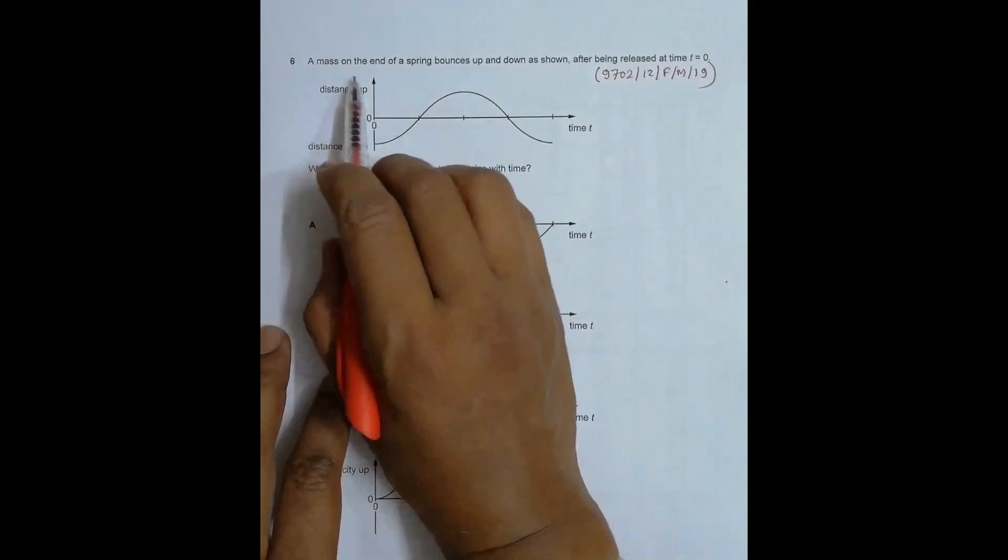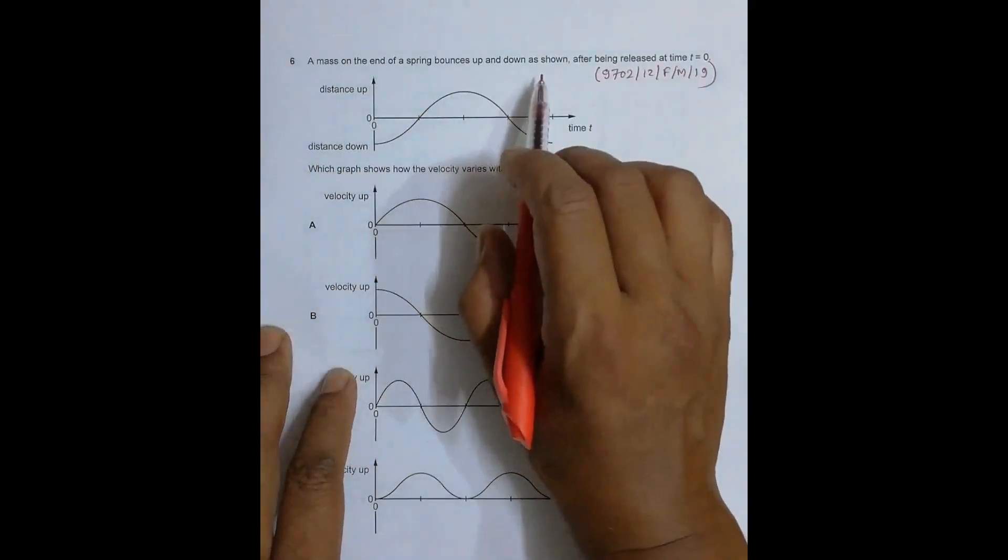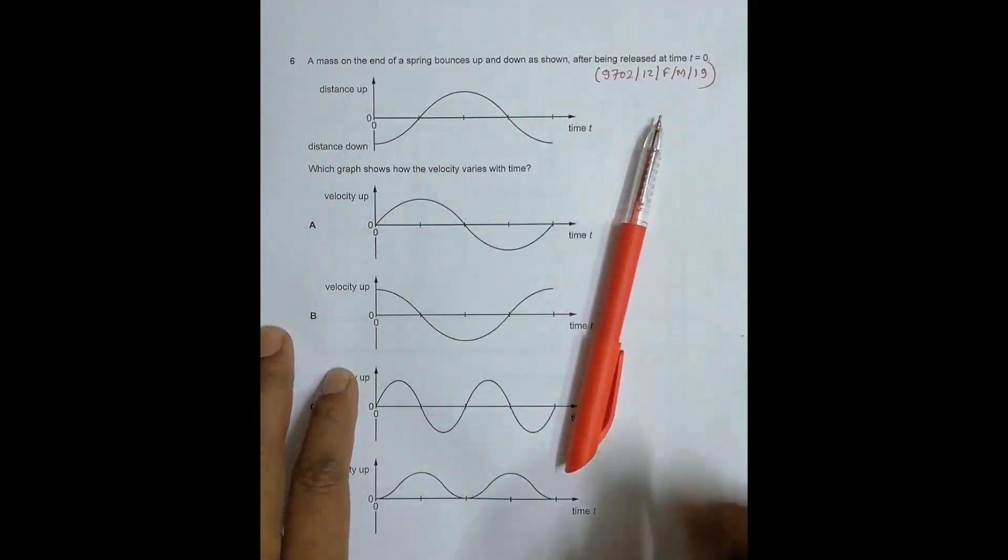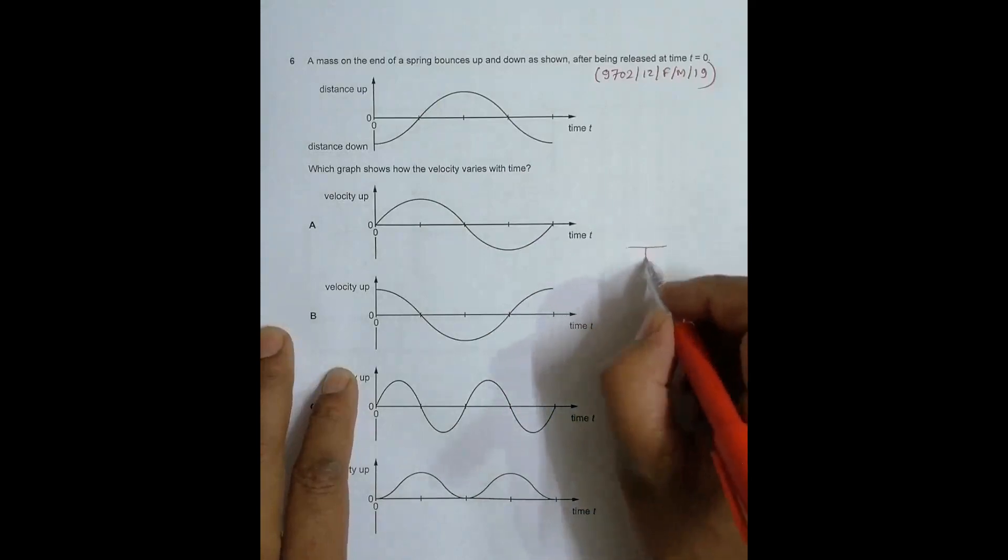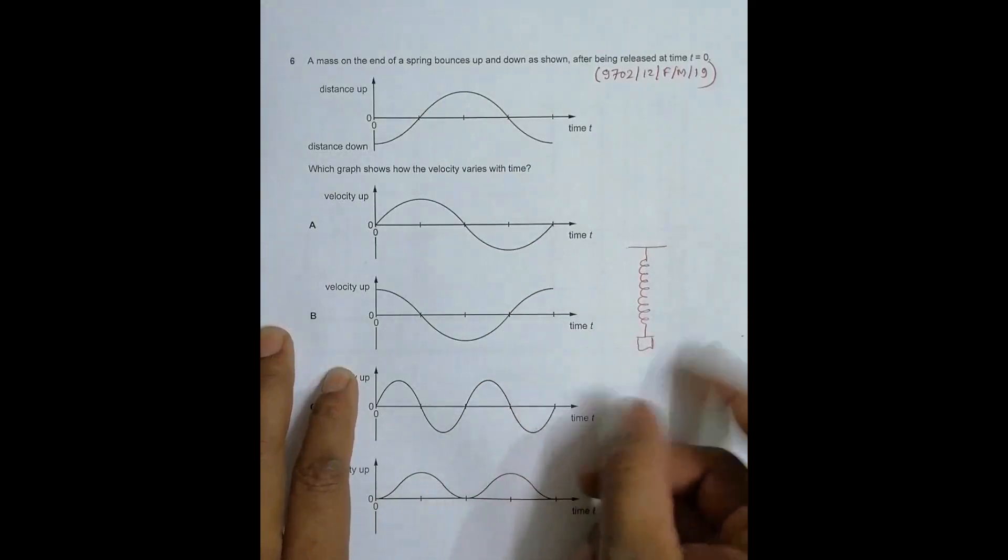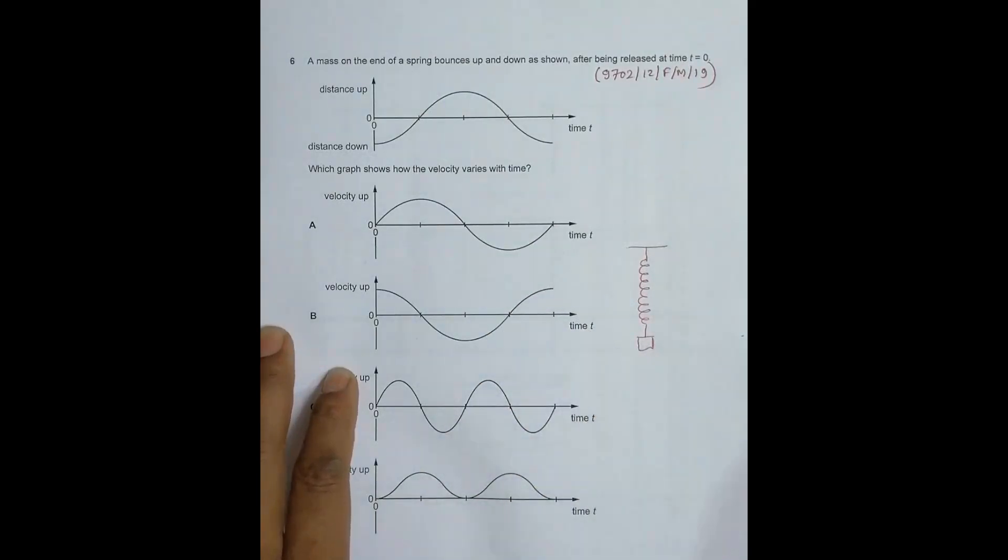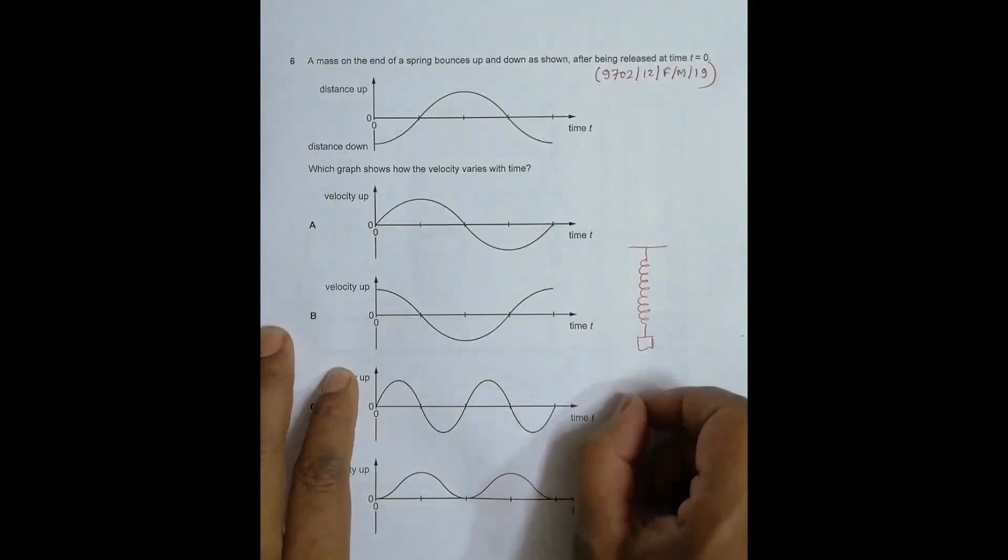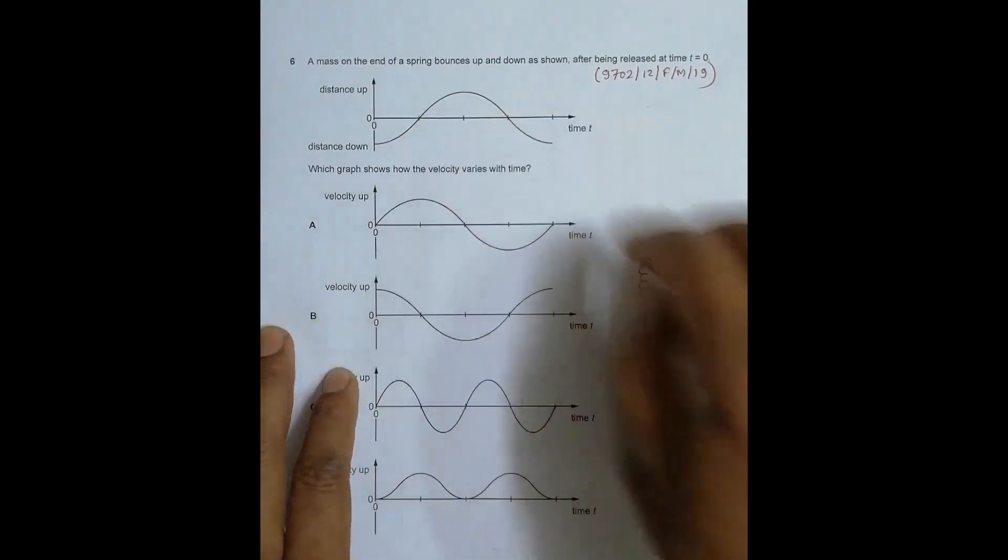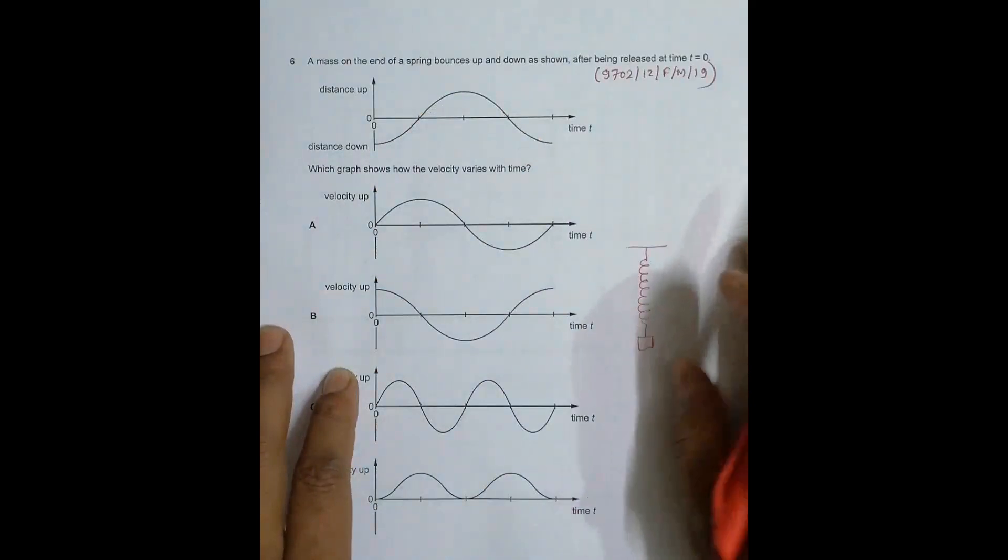It says that a mass on the end of a spring bounces up and down as shown after being released at time t equals zero. So we have a spring here with a load mass. We pull it down, then leave it. Initially here, the distance down is maximum. We leave it, so it comes here, then goes up, then down again, and so on. This is the graph of distance versus time, distance up or distance down, which we can relate to displacement.